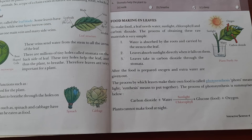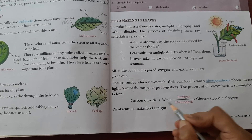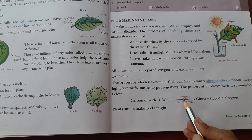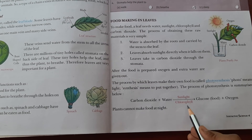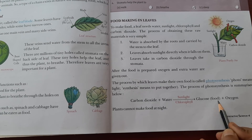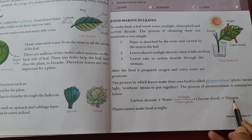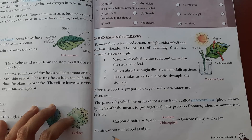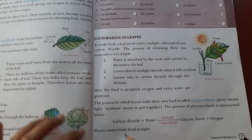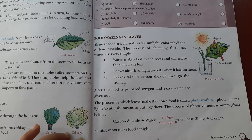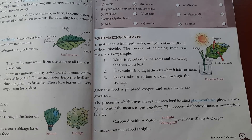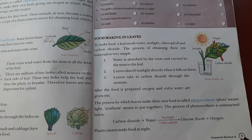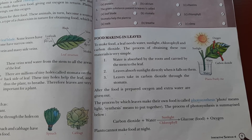The process of photosynthesis is summarized as: carbon dioxide plus water, in the presence of chlorophyll and sunlight, the leaf prepares glucose food and releases oxygen. Plants cannot make food at night.